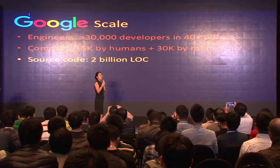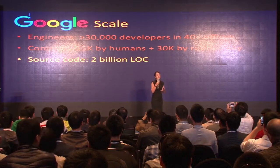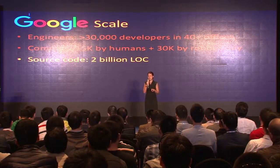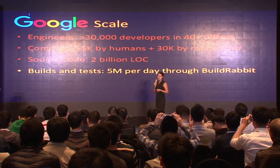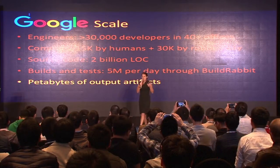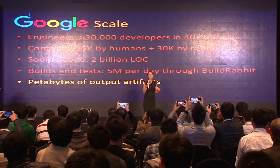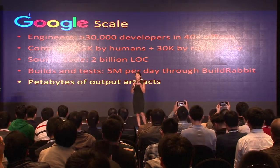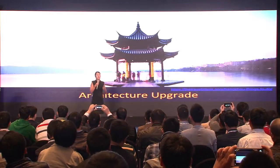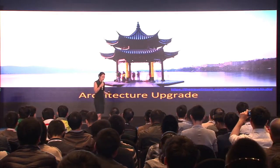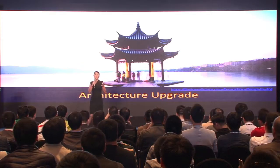The source code is two billion lines of code, and half of that codebase changes daily. Every change issued in a commit triggers a rerun of all tests to ensure everything still works. There are roughly five million builds and test requests going through BuildRabbit, producing petabytes of output artifacts. When the project started, it was quite small and experimental. We didn't know exactly what the niche or how many users would be using it. But as it became popular and more engineers and teams depended on it, we started hitting the limits of our architecture.